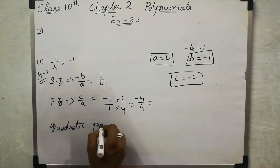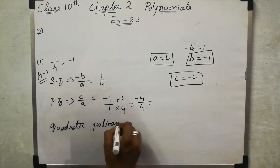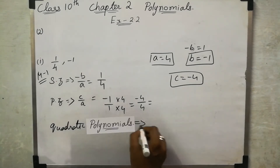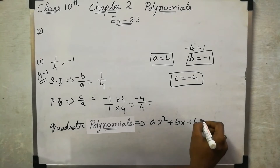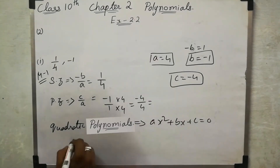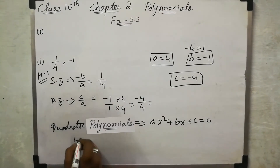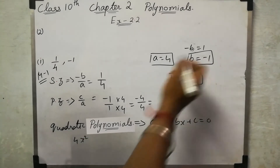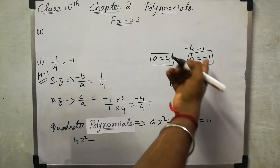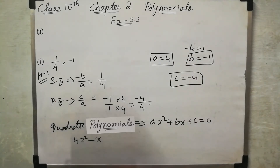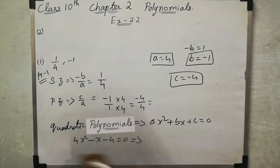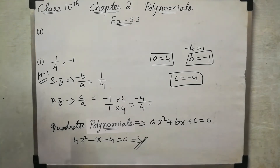The quadratic polynomial is written in the form ax squared plus bx plus c equal to 0. So with a equal to 4, we write 4x squared. Then b equal to minus 1, so minus x is the coefficient on x. Then c equal to 0. This gives us the quadratic polynomial. The equation is written on x squared. Next is the second method.